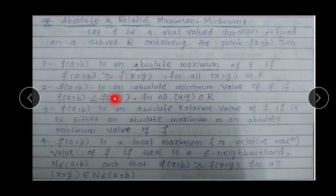Next, F(A,B) is an Absolute Minimum value of F if F(A,B) ≤ F(x,y) for all x, y belonging to R. If the value of F(A,B) is less than or equal to F(x,y) at every point of R, then F(A,B) becomes the minimum value — no value less than it exists. Therefore F(A,B) is called the Absolute Minimum value of F.